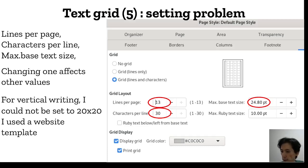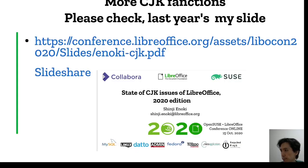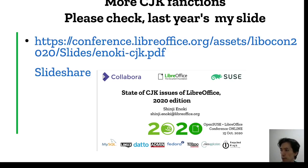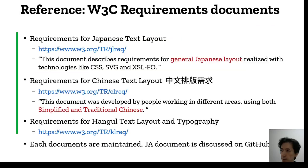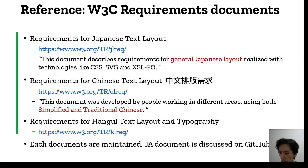So I use a website template. For more CJK functions, please check last year's slides and reference the W3C requirements documents for Japanese, Chinese, and Hangul — three documents. Each document is maintained and discussed on GitHub issues.